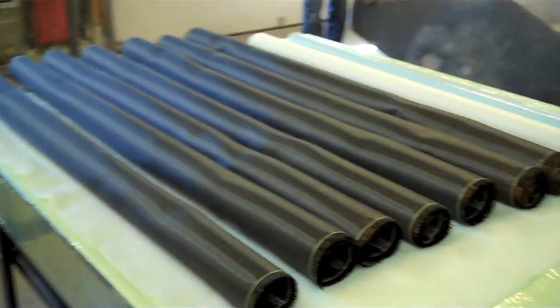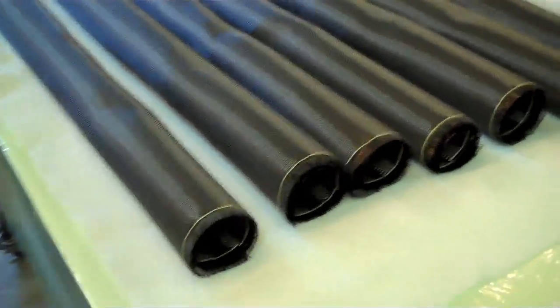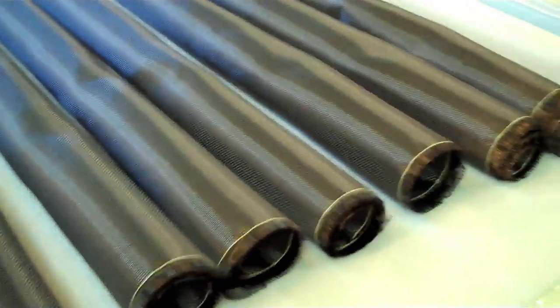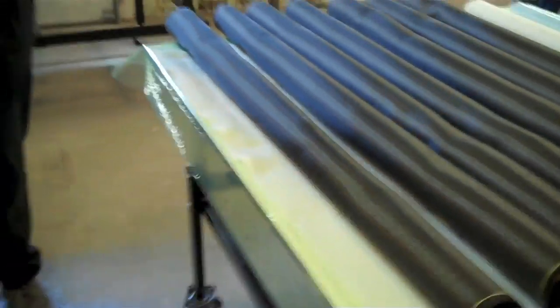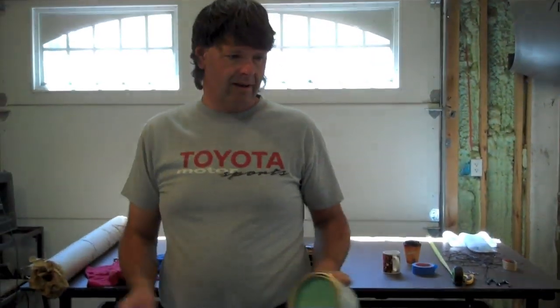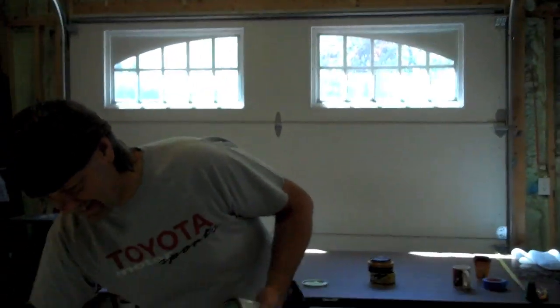And then over here to the right we have the layup table, where you've got all your carbon fiber cut and the bleeder material and the bagging material all ready to go. Yeah, everything's there already. It's easier to cut it out, make it ready while it's dry. And then I'll just transfer it over here, put some resin, make a beautiful part.